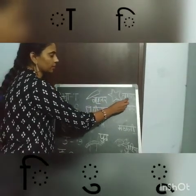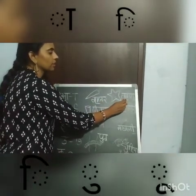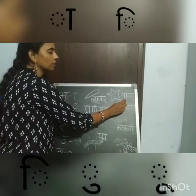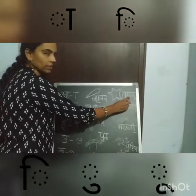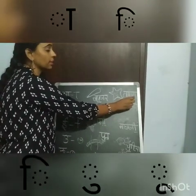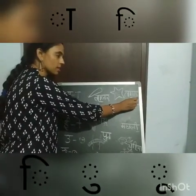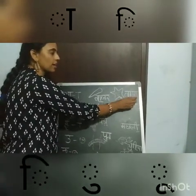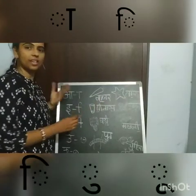And next, the next word — Tara. Taki Matra, Raki Matra — R. Tara means star.